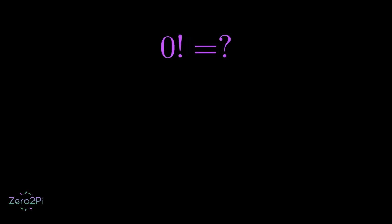What is the value of 0 factorial? Many people assume it should be 0 and to be honest it seems reasonable. Because it looks like we are multiplying 0, right?